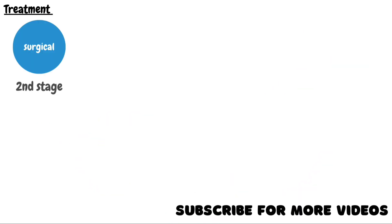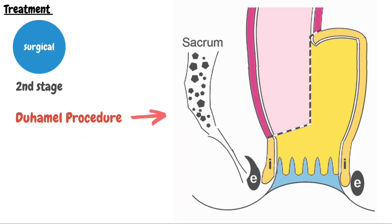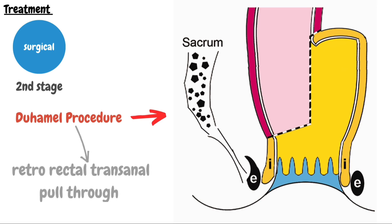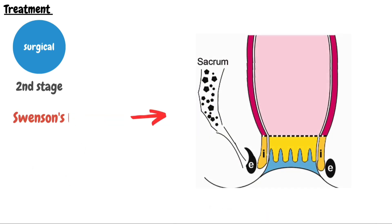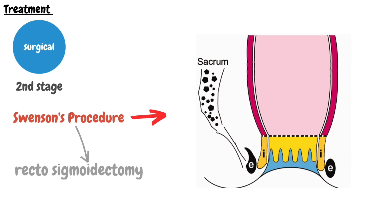The first is the Duhamel procedure, also sometimes called a retrorectal trans-anal pull-through. In this, the aganglionic colon proximal to the rectum is resected and a side-by-side attachment of normal ganglionic colon to the posterior wall of the rectum is performed. The second is the Swenson procedure, also known as rectosigmoidectomy, in which the aganglionic segment of the bowel is cut and removed and the remaining bowel is normally attached to the anal sphincter.